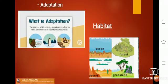Second is habitat. Habitat is the living or dwelling place of an organism. It is the natural home of an animal or a plant.